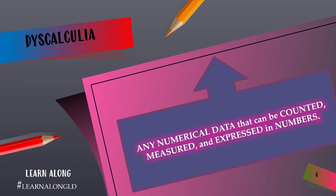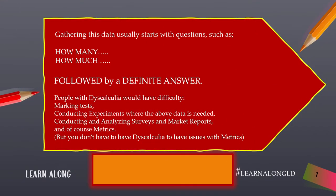Dyscalculia involves any numerical data that can be counted, measured, and expressed in numbers. Gathering this data usually starts with questions such as how many or how much, followed by a definite answer. People with dyscalculia would have difficulty marking tests, conducting experiments where numerical data is needed, conducting and analyzing surveys and market reports, and of course metrics. This data is more concise and closed-ended — it's not open for interpretation.